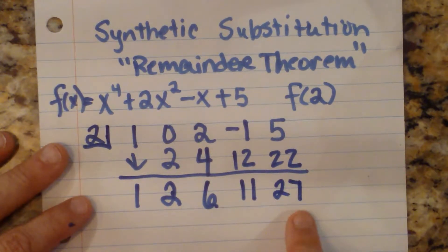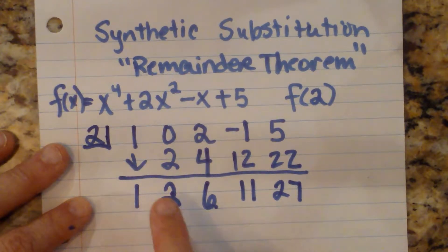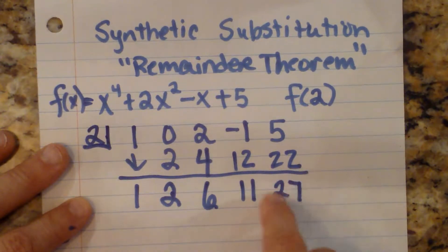So what this tells us is we have a depressed polynomial, which is 1x cubed plus 2x squared plus 6x plus 11, and the remainder is 27.